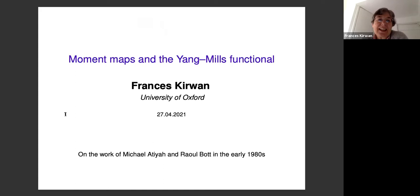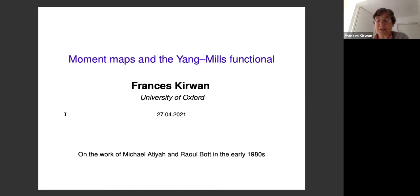Thank you, Peter, for a very kind introduction. I would like to say a little bit about the work of two of the Gang of Four — Michael Atiyah and Raoul Bott — and in particular two papers that they wrote in the early 1980s, around the time that I was Michael Atiyah's student in Oxford. The first paper was titled 'The Yang-Mills Equations over Riemann Surfaces.'